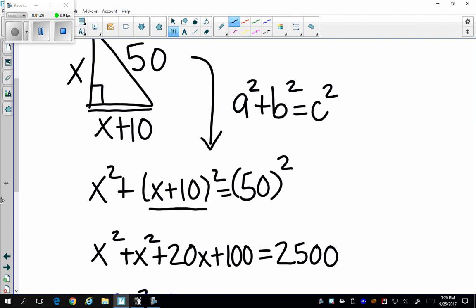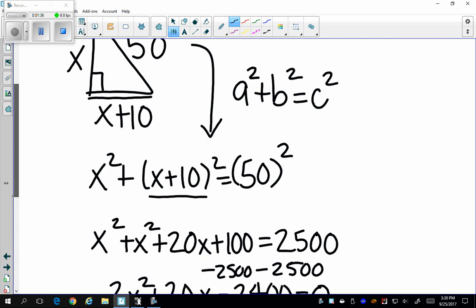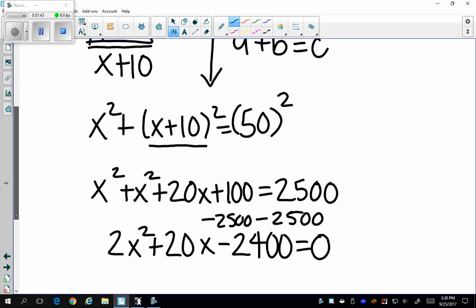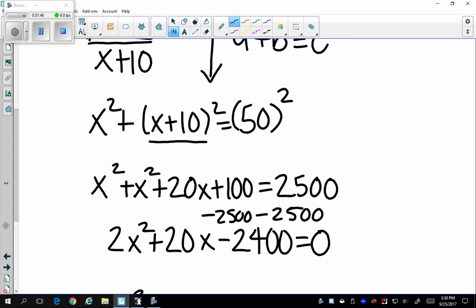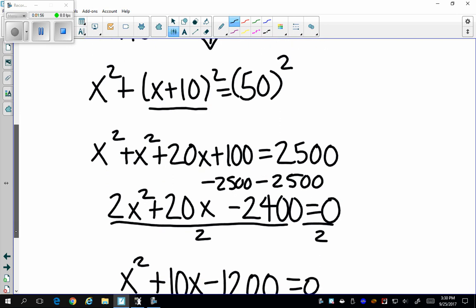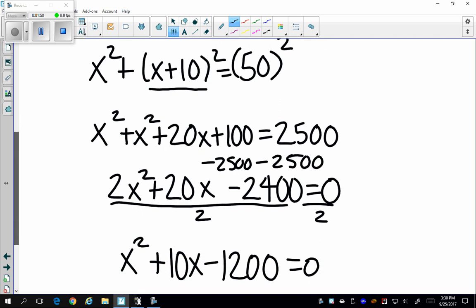Now I want to get my equation equal to zero so I'm going to subtract 2500 from each side. So now I get 2x squared plus 20x minus 2400 equals zero. Now I notice when I want to factor that I want to divide everything by two since that is the GCF. I want to divide everything by two. Now I get x squared plus 10x minus 1200 equals zero.